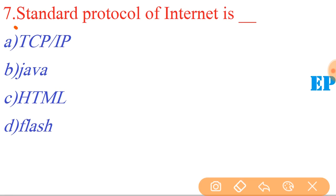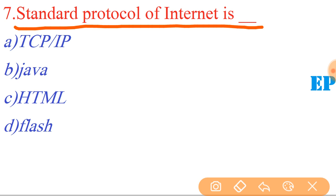Standard protocol of the internet is what? Standard protocol of the internet is TCP/IP. TCP/IP is the standard protocol of the internet. TCP/IP stands for Transmission Control Protocol/Internet Protocol. So the right answer is TCP/IP — it is the standard protocol of the internet.